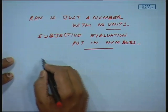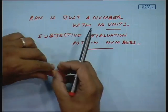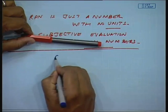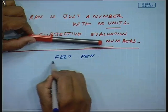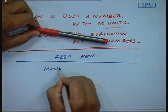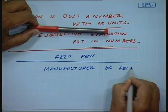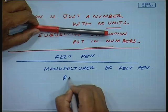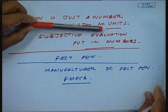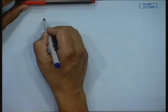I will give you another example to make this clearer. This felt pen is a good example. If I were a manufacturer of felt pens wanting to do FEMICA to evaluate the most critical component in the manufacturing process, let us assume the important components: the cap, the felt tip, the body, and the assembly.